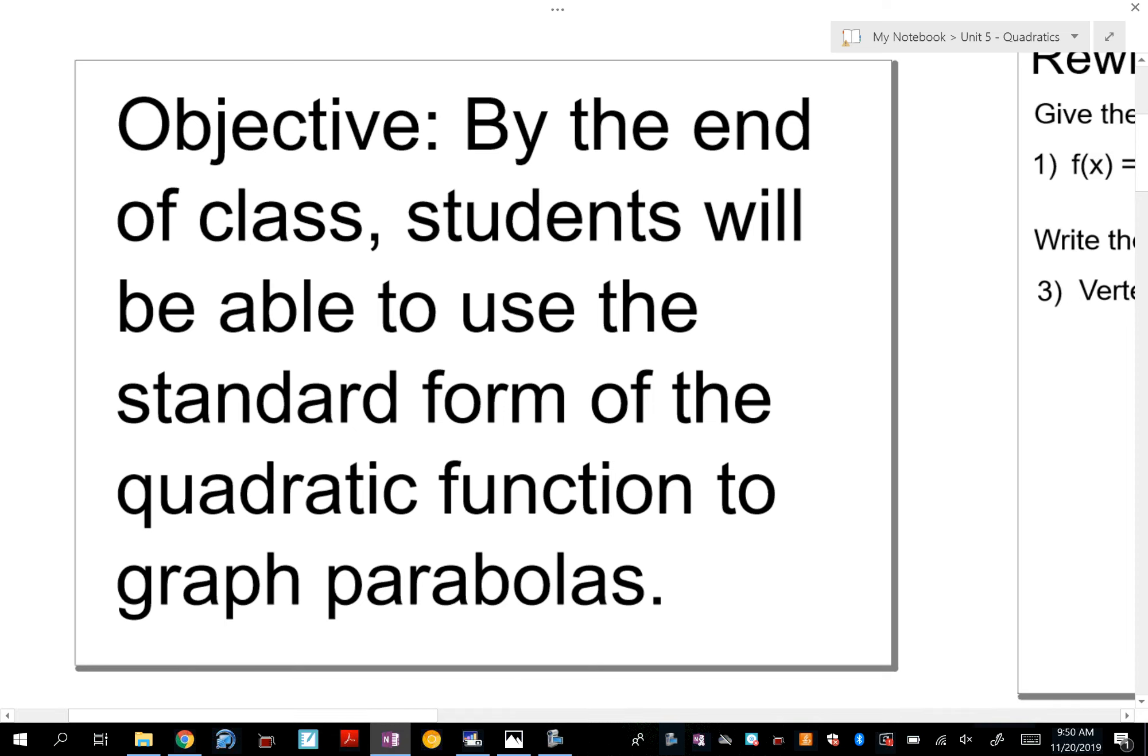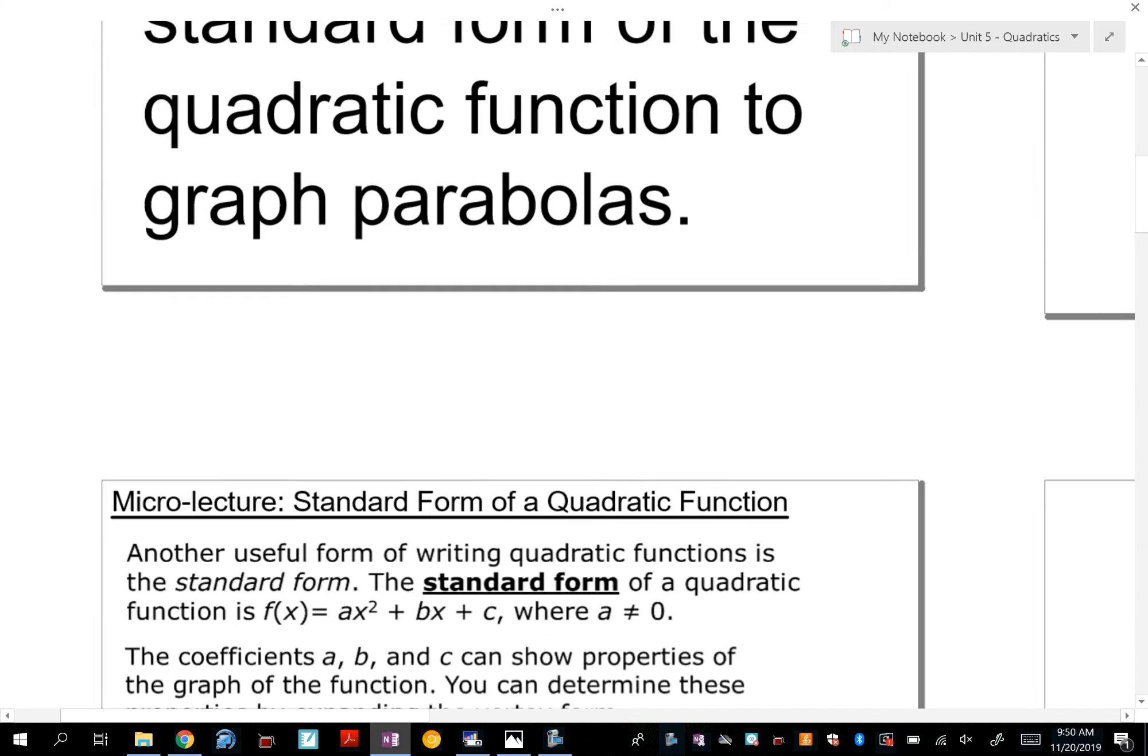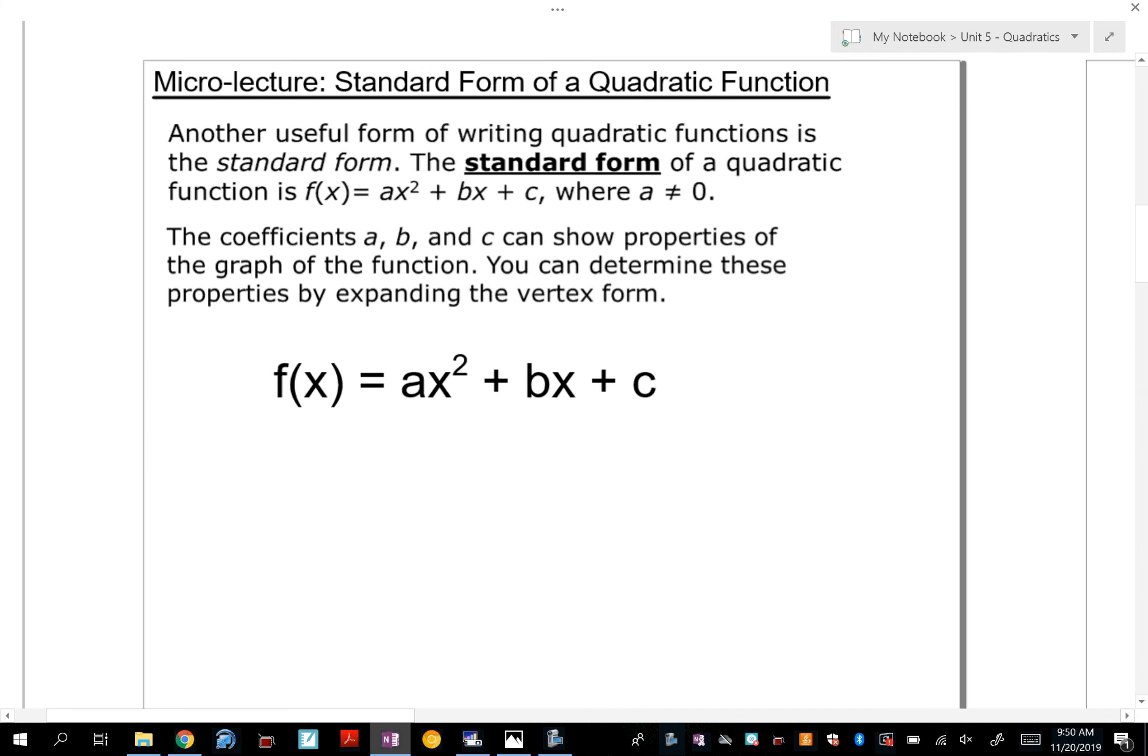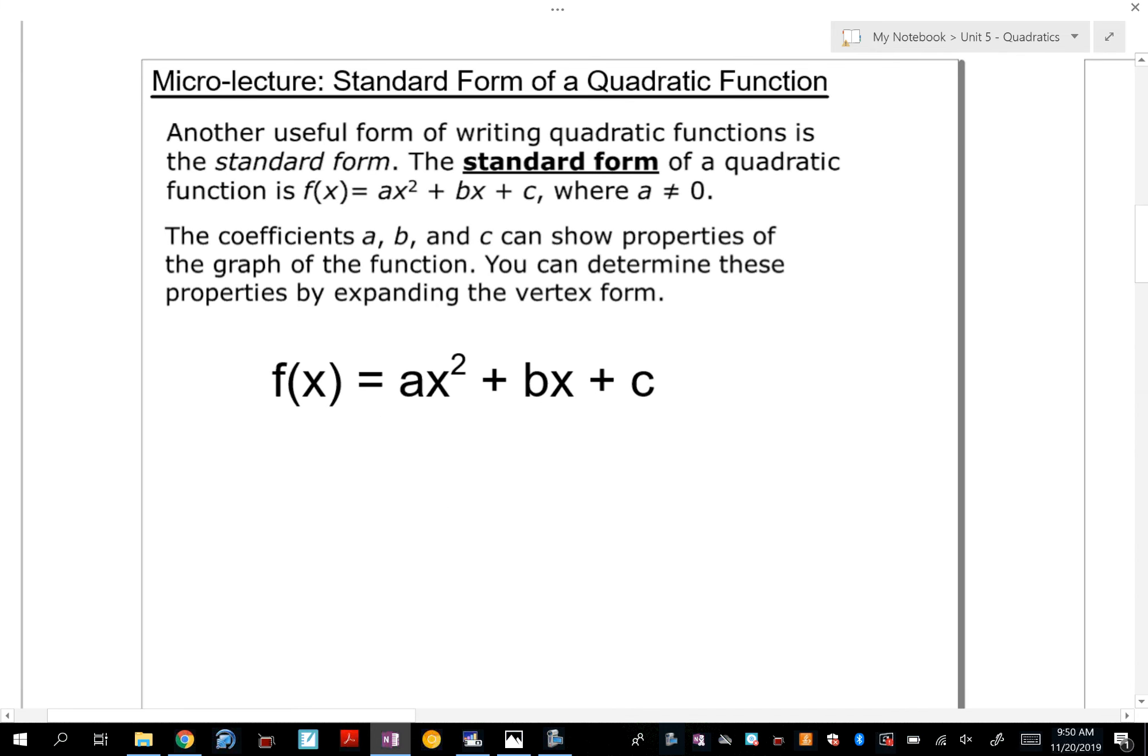All right, so we're here with period 7, our blue class, to talk about graphing quadratics when they're in standard form. The first thing we have to do is you must know what standard form looks like. So here is what standard form looks like, and this hopefully is a form that you're familiar with because of all the work we spent factoring, completing the square, and using the quadratic formula. So this is that same form: a, b, and c are the coefficients for this one.